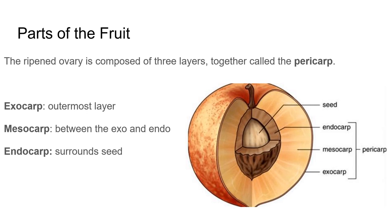Here we can see a picture of a peach — we have the seed in the middle, the stony endocarp, then the fleshy mesocarp, and the thin exocarp. Those particular characteristics make this a drupe, but drupes can look different; they're identified by where the layers are. Endocarp is innermost, mesocarp is between the endo and exocarp, and exocarp is on the outside.